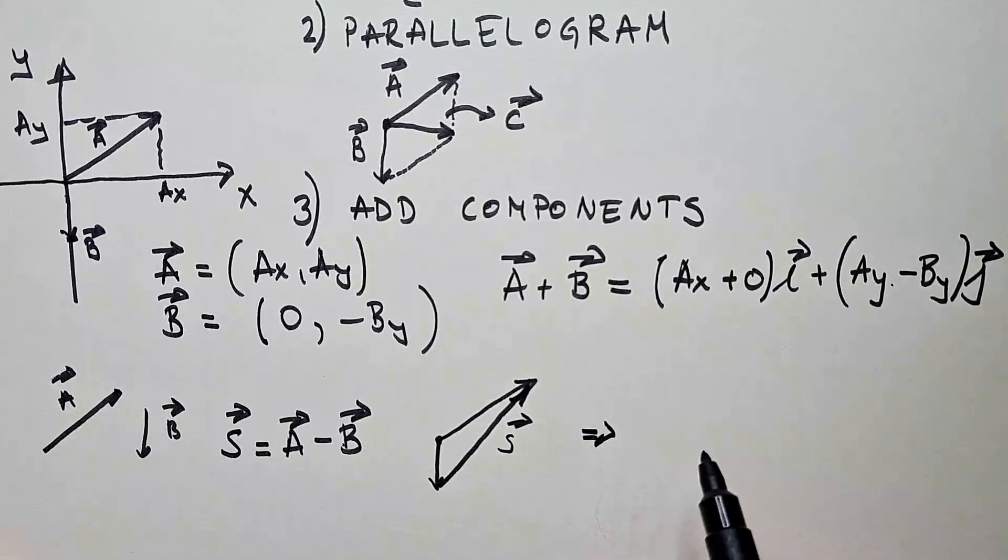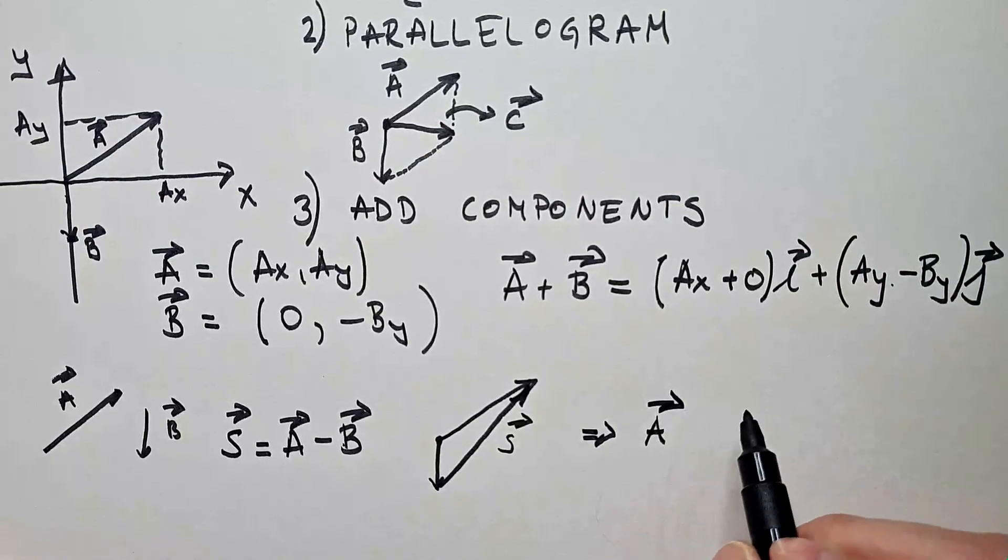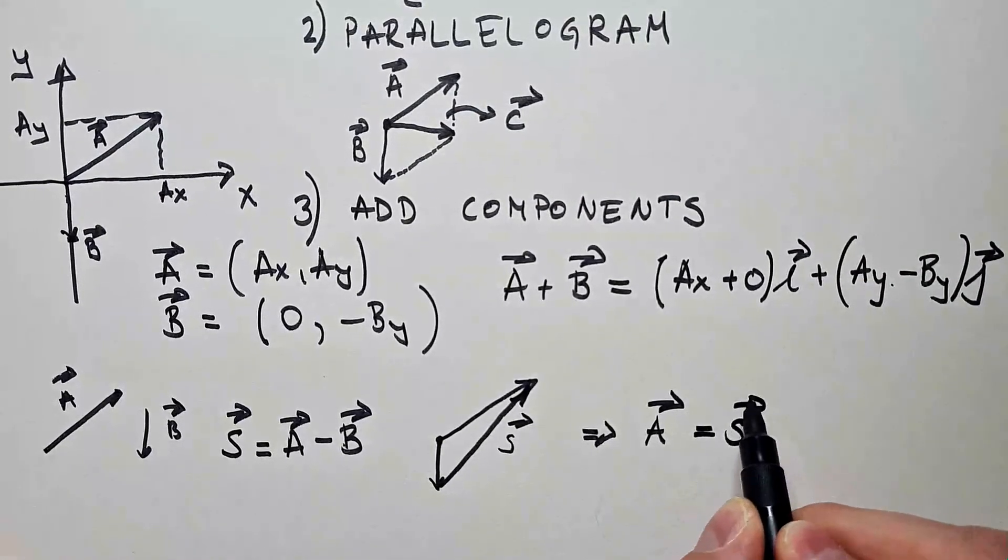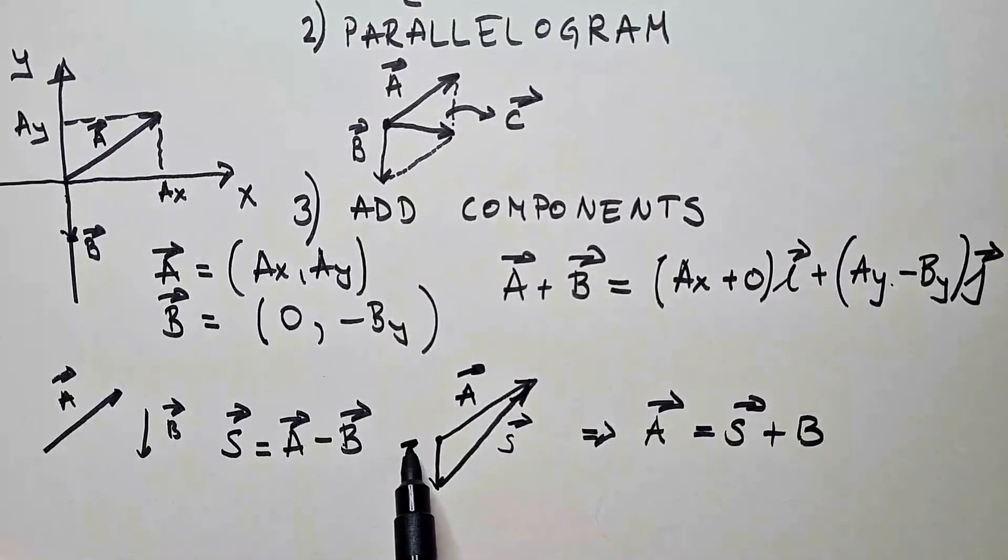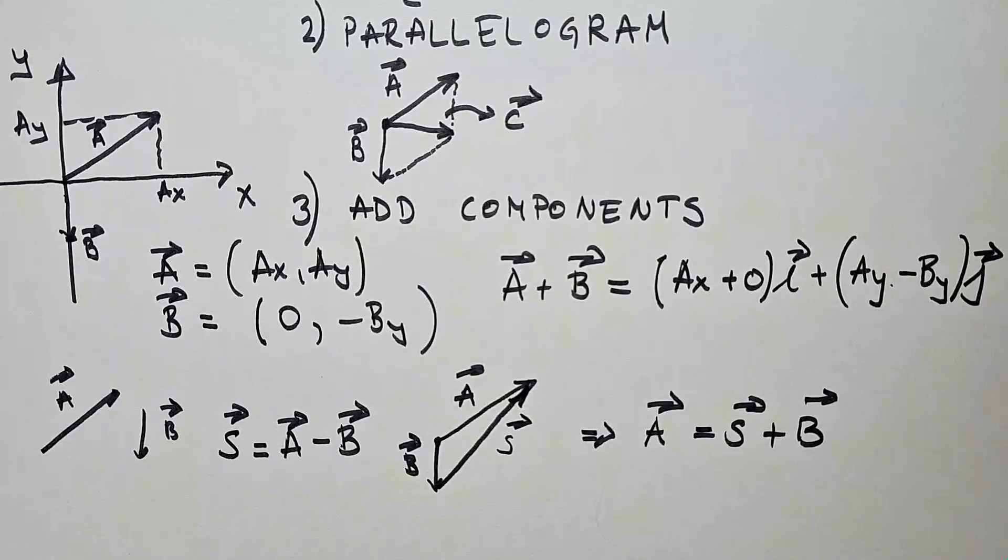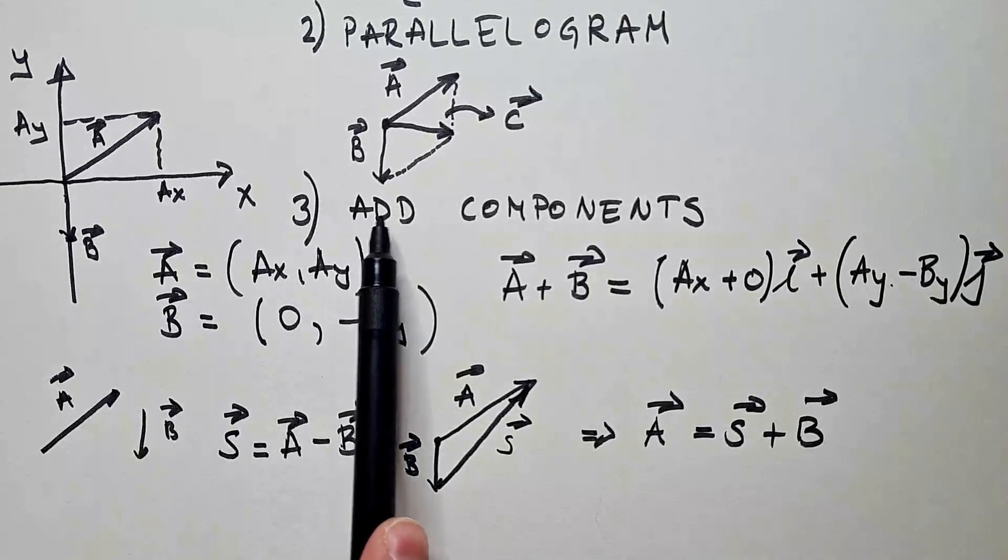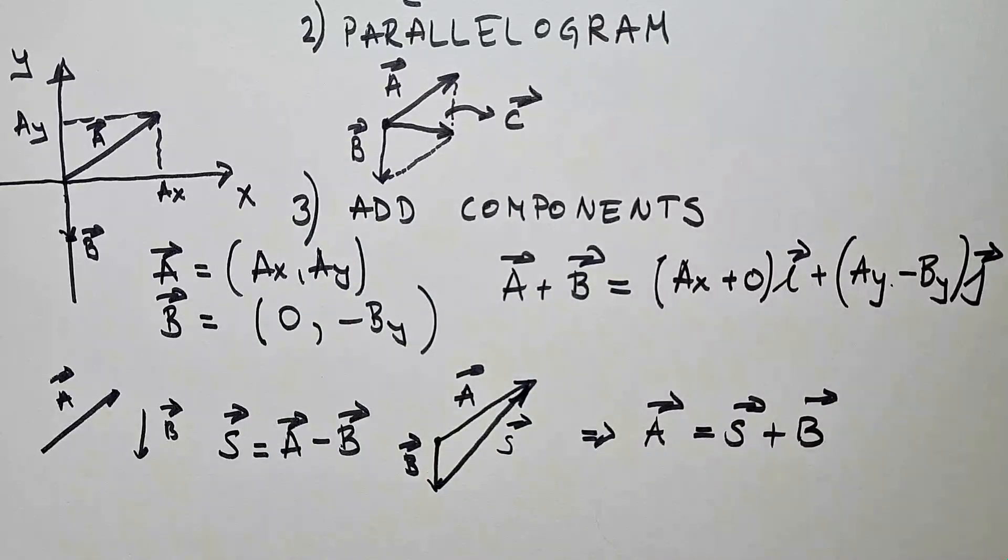Clearly, you can see from here that A is equal S plus B. Namely, this is A, this is B. Of course, the other way we can subtract vectors is using components, and that's in principle the same as adding them, but instead of addition, we would have subtraction.